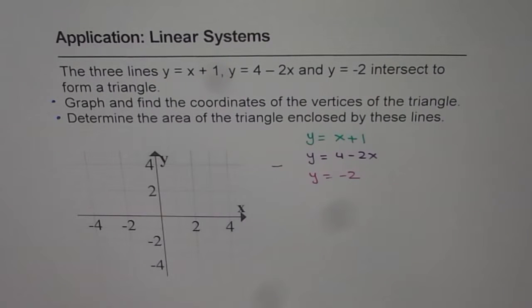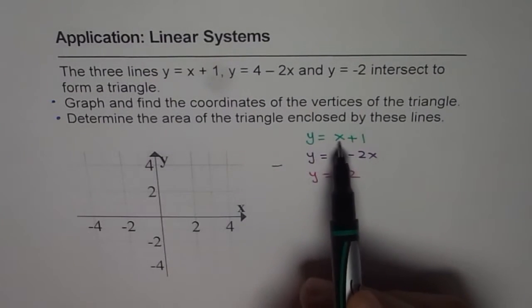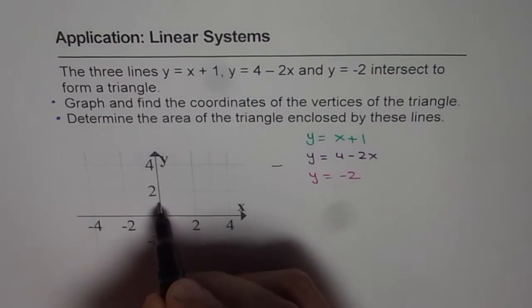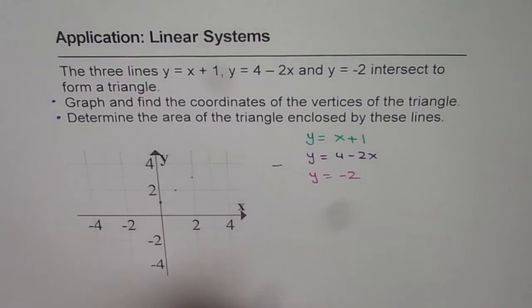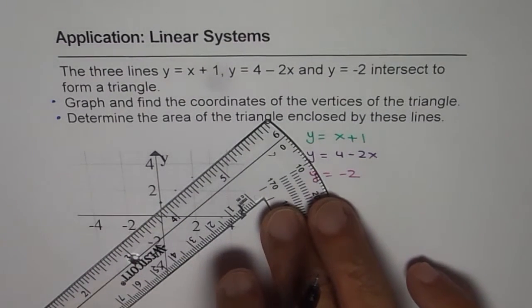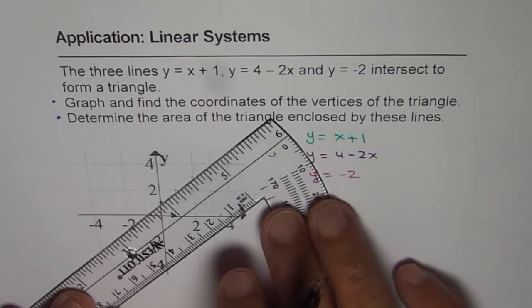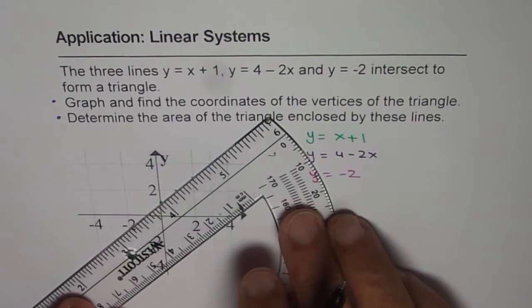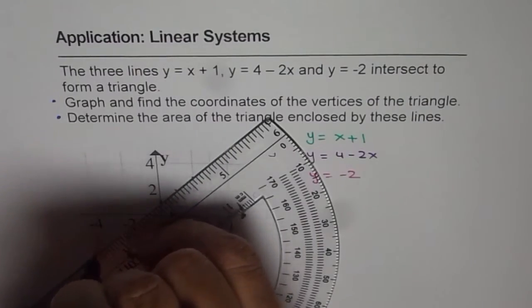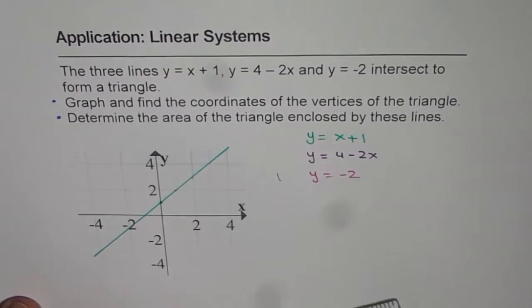the first line, which is y equals x plus 1. Now y-intercept is 1, slope is also 1, so that goes like this. So we can draw this line with y-intercept at 1. So this is your line, so let's just graph it. So that's the first line.